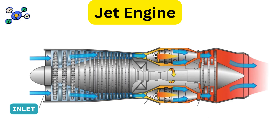Let's walk through the main components of a jet engine. The front section is the fan — the very first part you see at the front of the engine. It sucks in a massive amount of air, both for combustion and for bypass. On modern commercial jets, about 80% of the air the fan pulls in goes around the engine — called bypass air — to provide additional thrust and cooling. The rest goes inside the engine core.